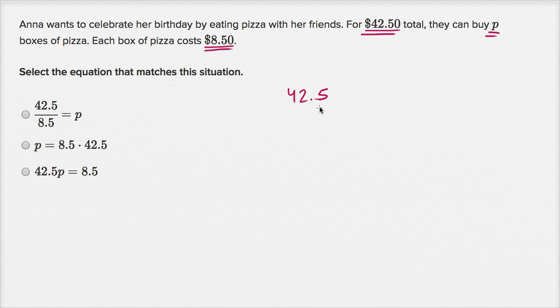And if I wanted to figure out how many boxes of pizza they could buy, I could divide the total amount they spend by the price per box, and then that would give me the number of boxes. So this is the total dollars, this right over here is the dollars per box, and then this would give me the number of boxes.